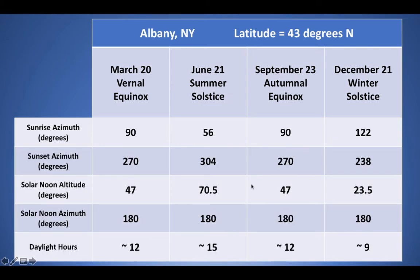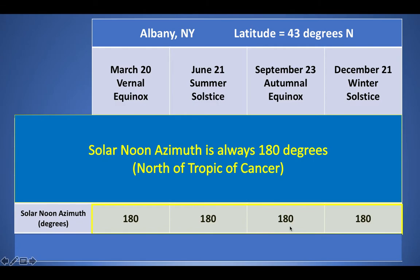The next pattern is the solar noon azimuth — the direction you'd look to actually see the sun when it's at its highest point in the sky. It's always going to be 180 degrees. You can see this is the case for all the equinoxes and solstices, and in fact every single day of the year regardless of the date. It's always 180, and that's true any time you live north of the Tropic of Cancer — which covers all locations in the United States.